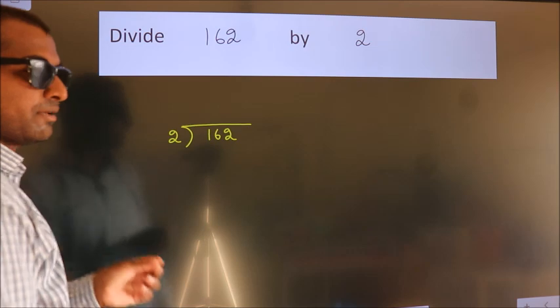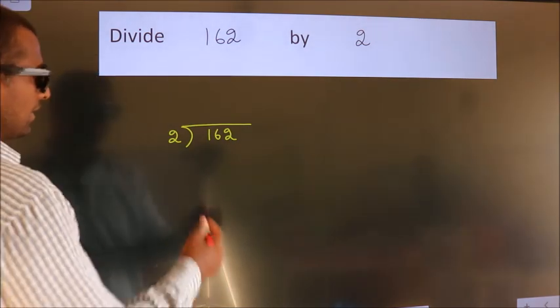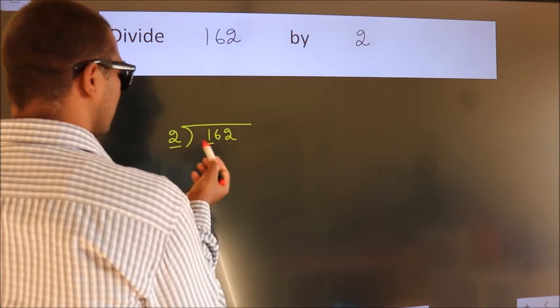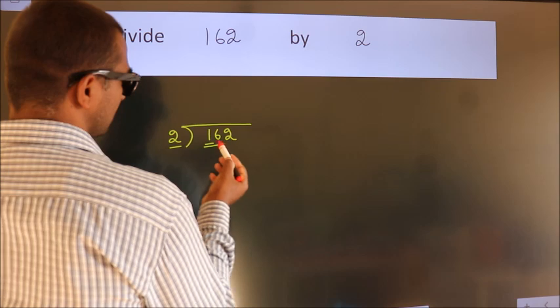This is your step 1. Next, here we have 1, here 2. 1 smaller than 2. So we should take 2 numbers, 16.